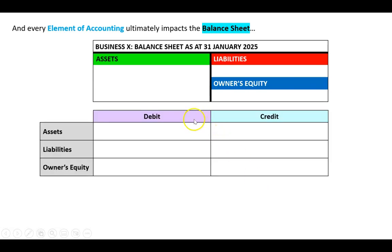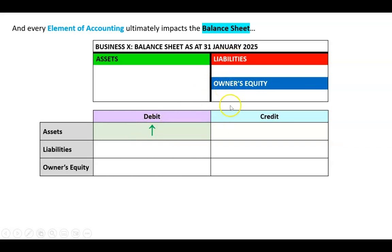We also know the accounting equation: assets must always equal liabilities plus owner's equity. So if we get an asset today that would be an asset going up, that would be a debit. Assets will go up on the debit side. On the other side we have liabilities and owner's equity, so if they go up that must be a credit for both of those.